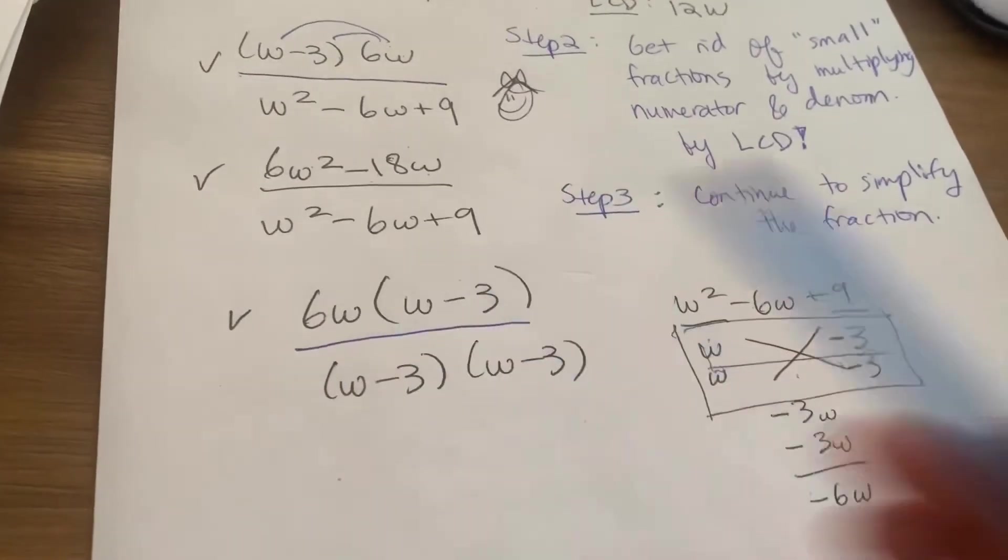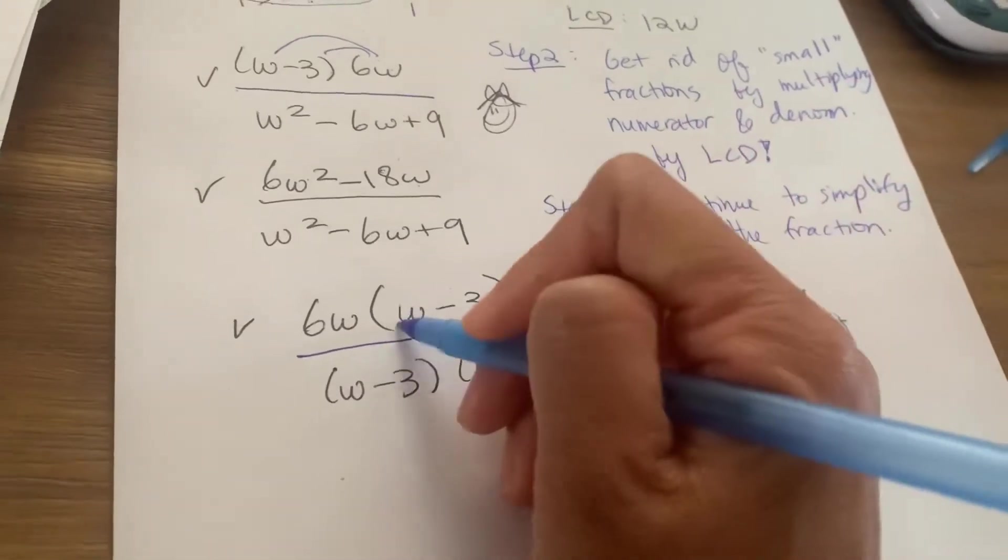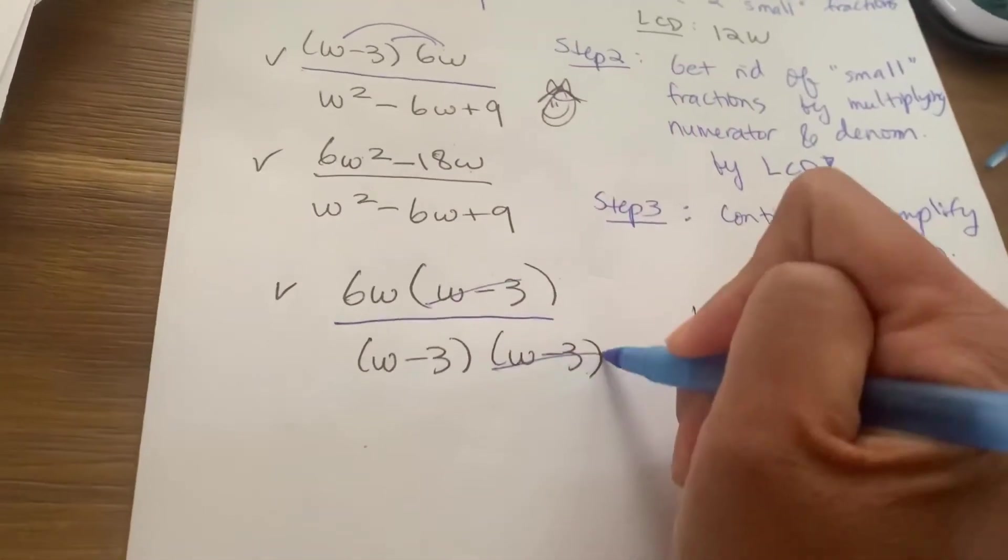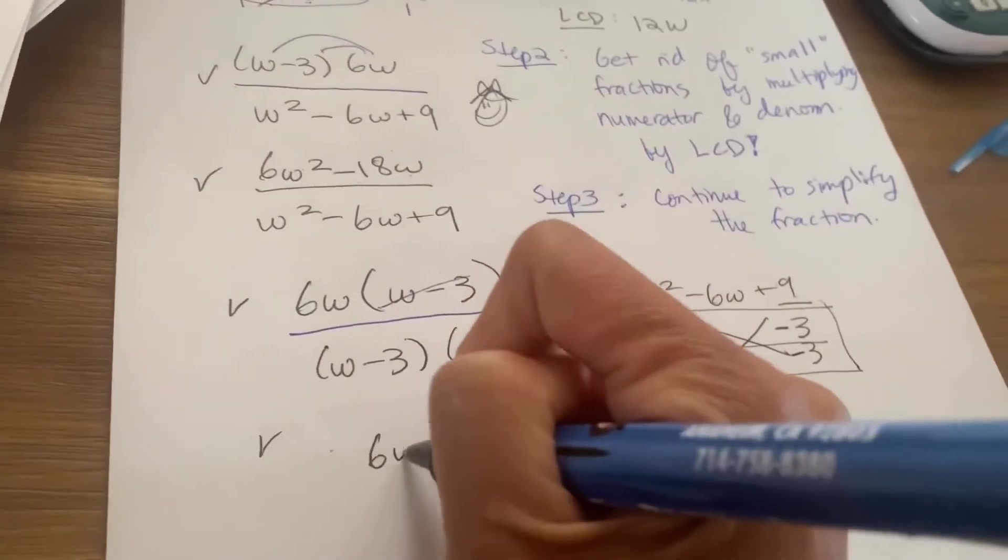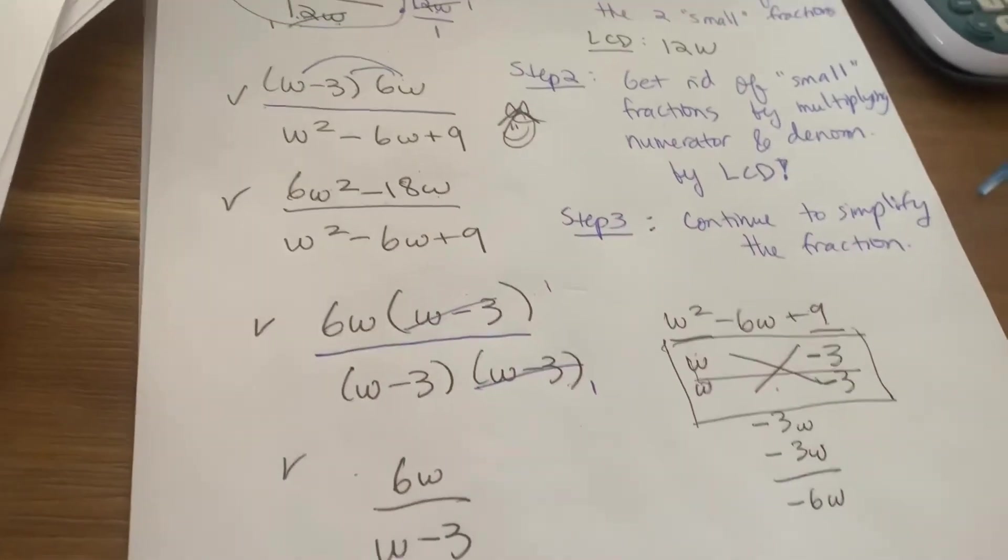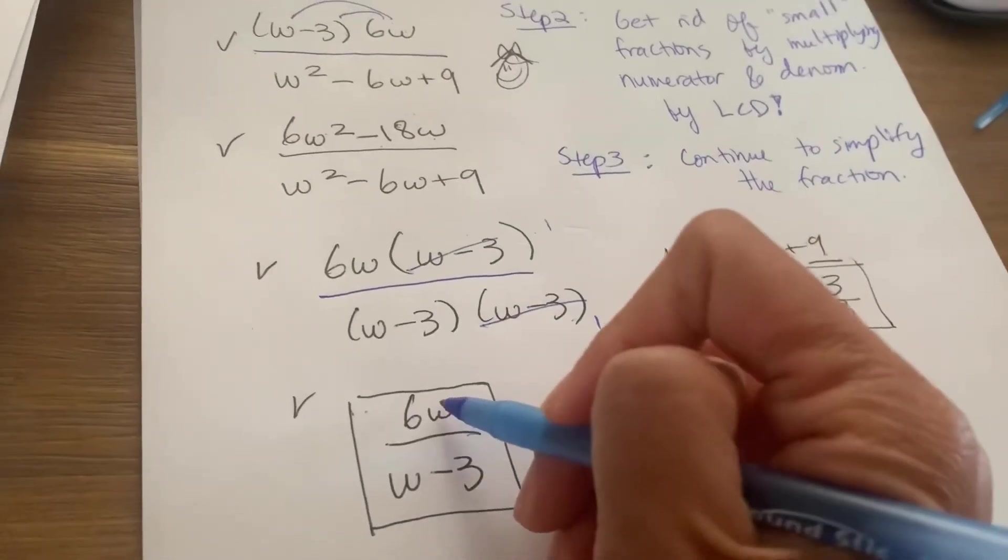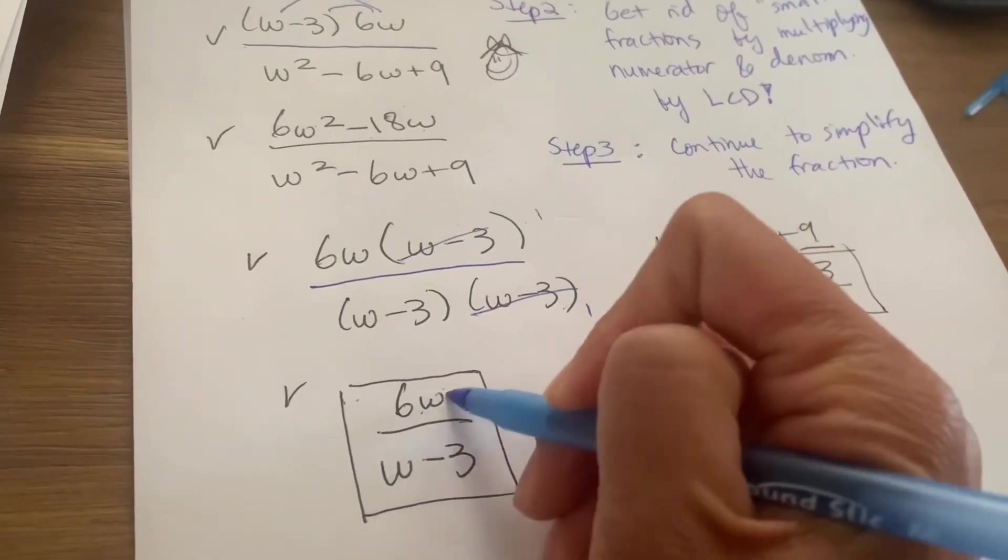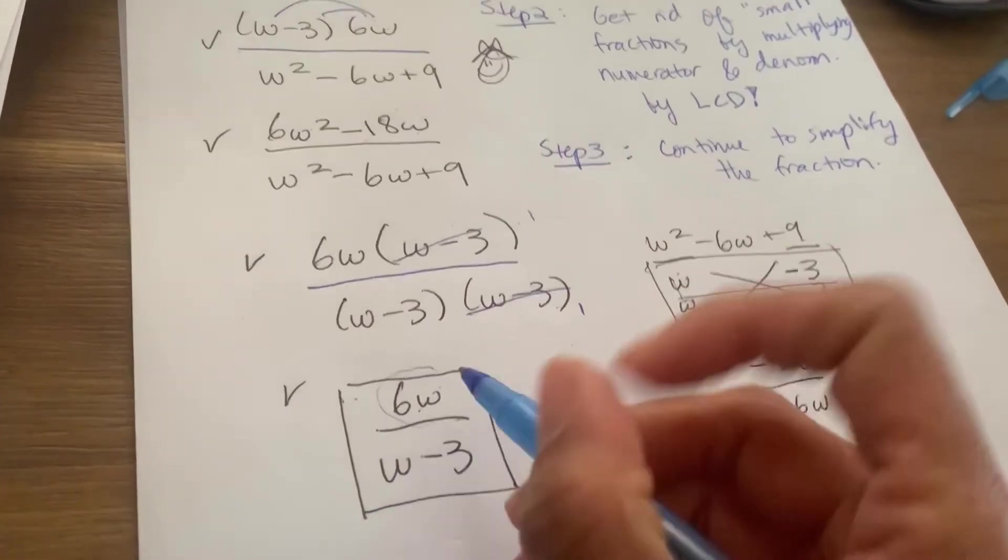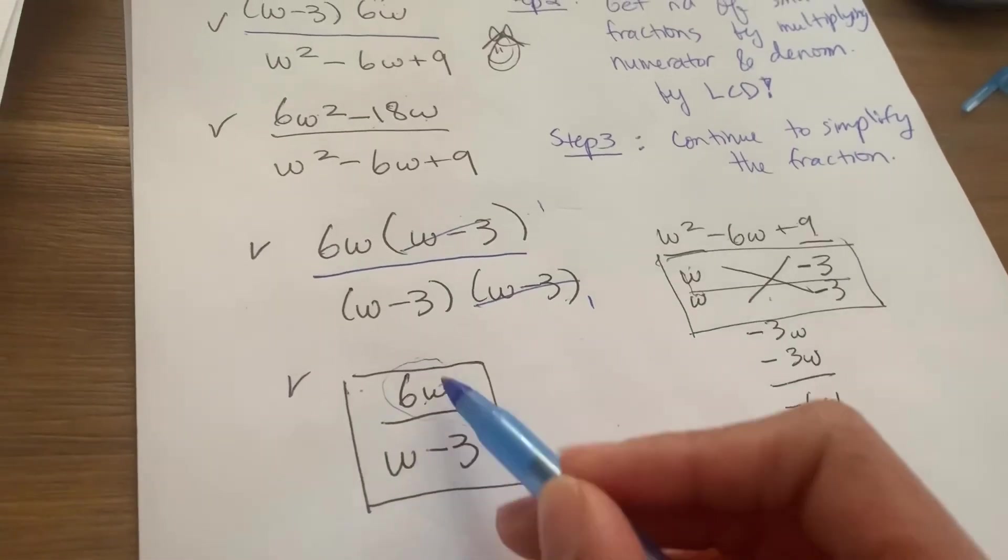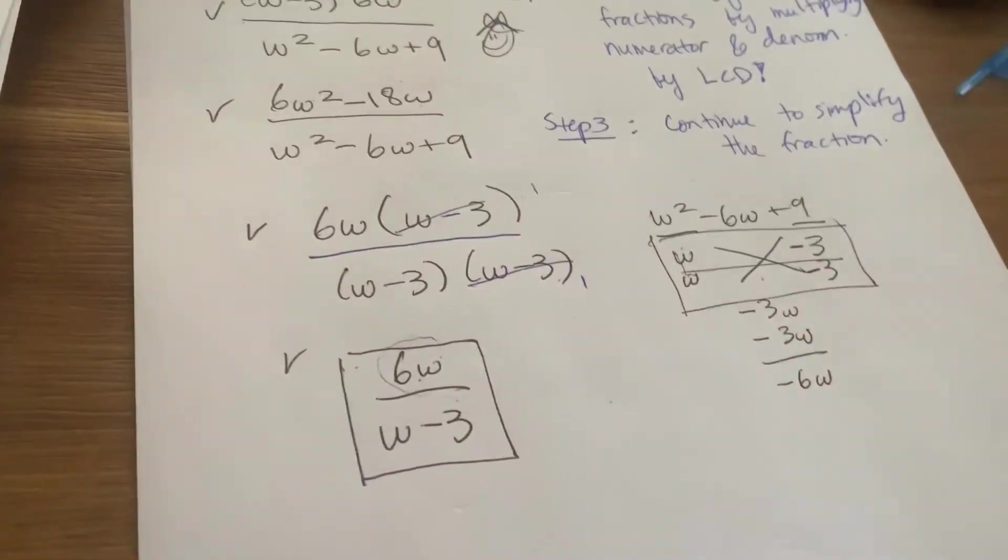Now I can say, oh, can I cancel any common factors on the top and the bottom? Well, what do you know? W minus 3 divided by W minus 3 will just give me 1. So now I am left with 6W over W minus 3. And that becomes my final answer. And again, please, please, please do not cancel the W out, right? Because this is a whole factor. This is a whole factor. You cannot cut a head from a body, right? So you can't just take out the W here and take out this. They all come together. So you leave as is.